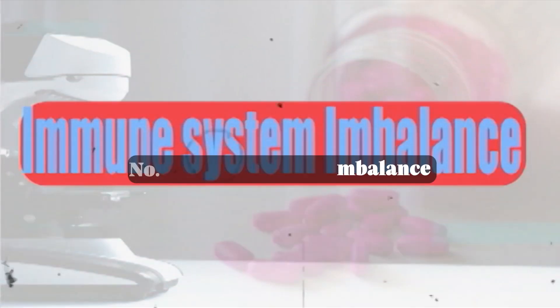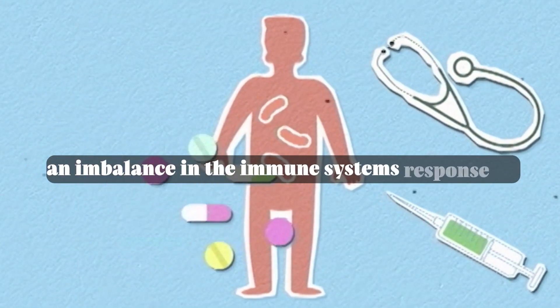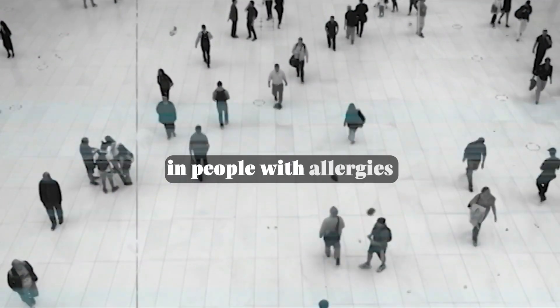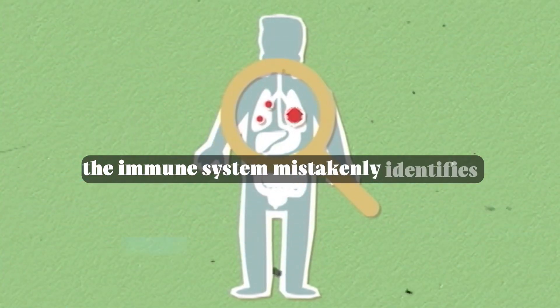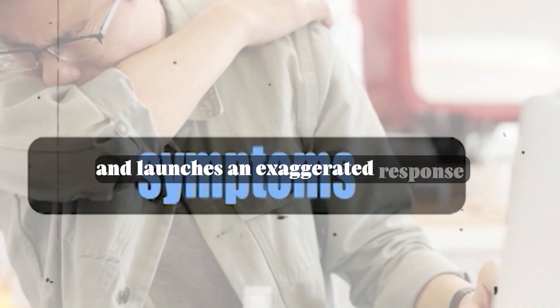Number five: immune system imbalance. An imbalance in the immune system's response to allergens can contribute to allergies. In people with allergies, the immune system mistakenly identifies harmless substances as threats and launches an exaggerated response, leading to allergy symptoms.